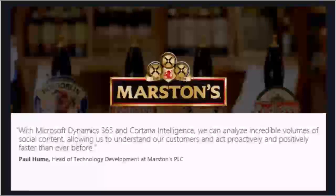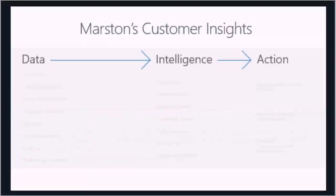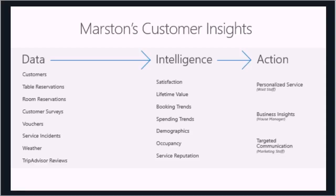Some of you may be familiar with a company called Marston's — they have a whole bunch of pubs around the UK. They used some of our social capabilities first, and now they're one of the first companies to use Customer Insights, as it was in preview. As you can imagine, they have quite a lot of different data from different places: customer data, some social, table reservations, rooms, surveys, weather data — because pubs are busier when it's great weather and not so busy when it's raining — plus their voucher system and all sorts of other systems.